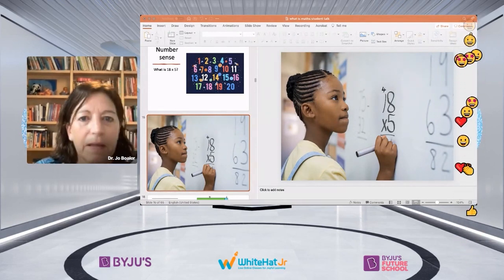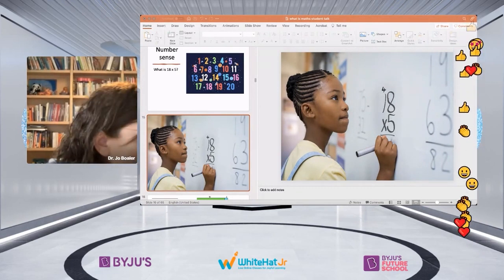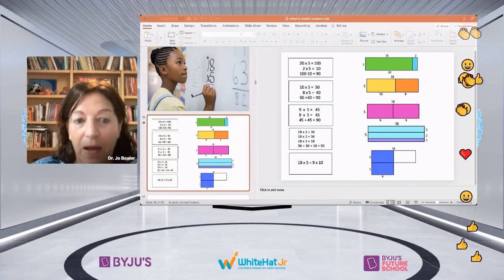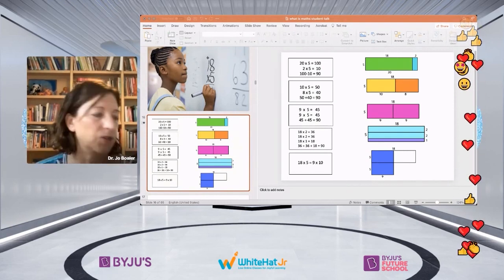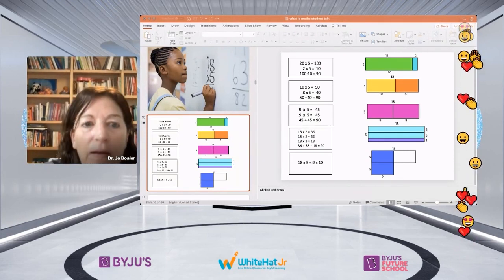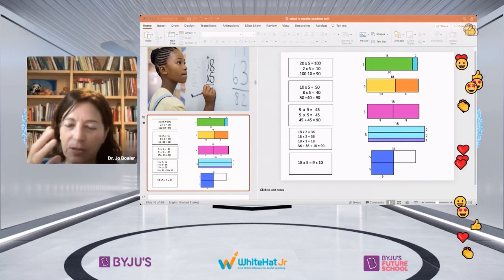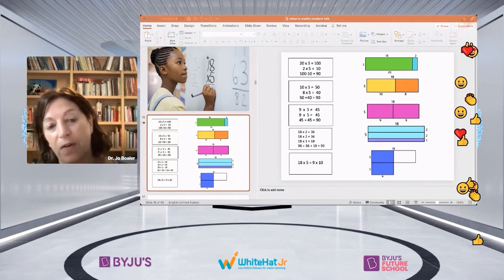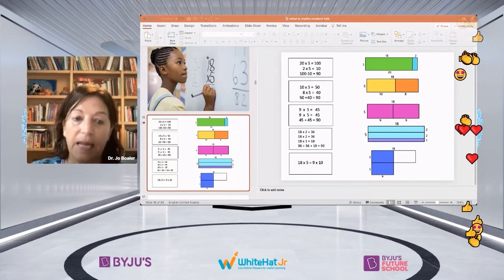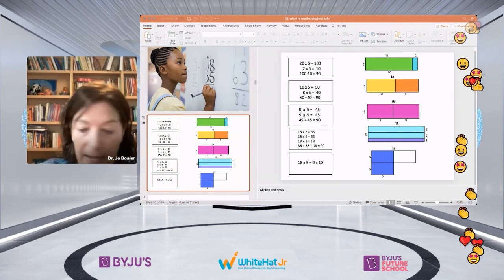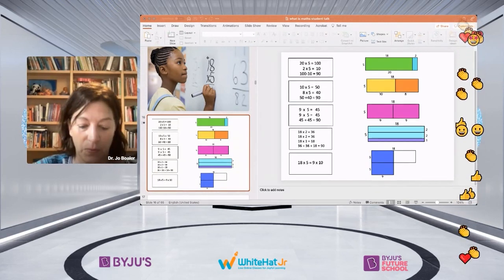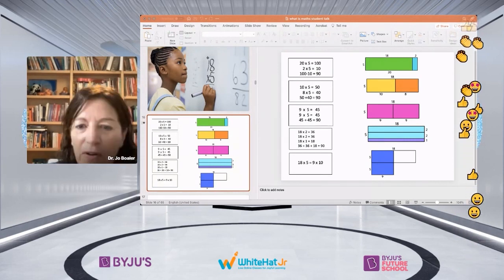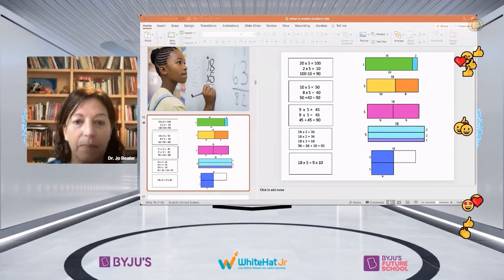But there are lots of other ways to think about 18 times 5. Some people think, I'm going to work out 20 times 5. Some people think, I'm going to work out 10 times 5. Some people think about 9 times 5. And in all of these cases, I've shown what it looks like visually. So what's really important in number sense is to be able to think flexibly with numbers, maybe change numbers into others. I don't want to think about 18 times 5, I'll think about 20 times 5 and then take off two fives. It's really cool to play with a calculator. That's what I did in a lot of my childhood. Numbers are everywhere in the world. Wherever you look, you see numbers. So being comfortable and flexible with numbers is really important.